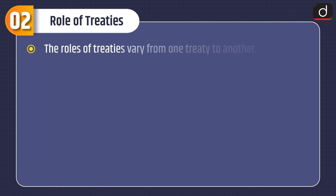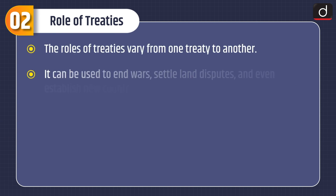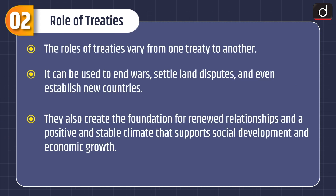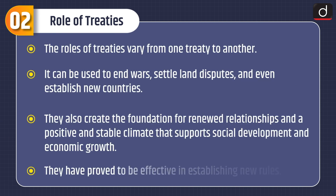Now moving on to the role of treaties. The role of treaties varies from one treaty to another. They can be used to end wars, settle land disputes, and even establish new countries. They also create the foundation for renewed relationships and a positive and stable climate that supports social development and economic growth. They have proved to be effective in establishing new rules.